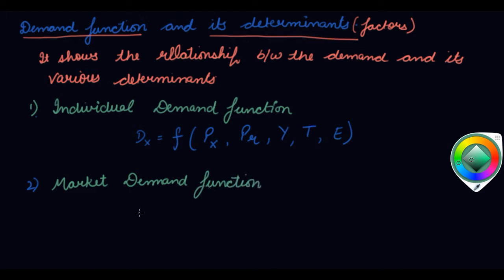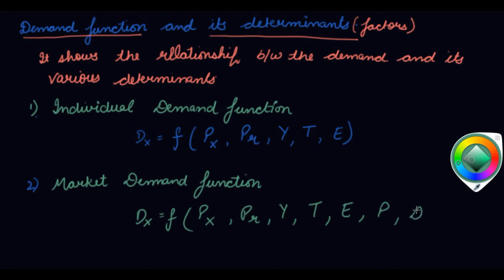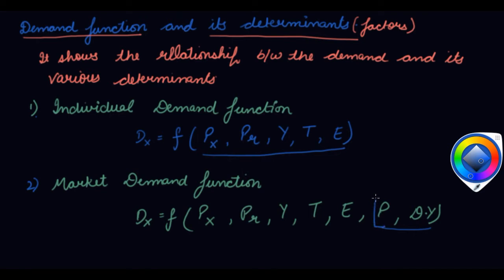The market demand function includes all of the individual demand function factors — price of the product, price of related goods, income, taste and preferences, and expectations — plus two additional factors: population size and distribution of income. These two additions make up the market demand function.